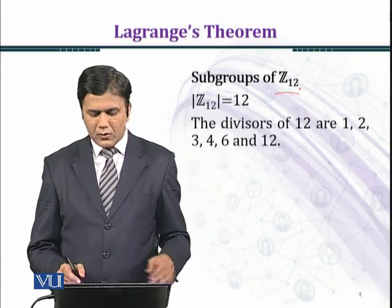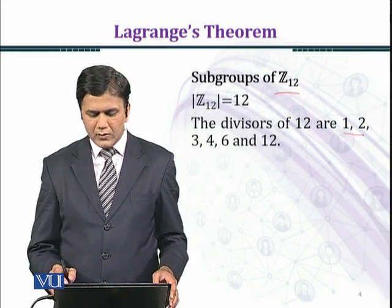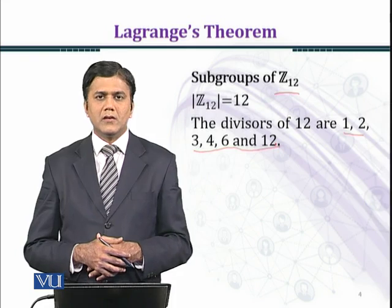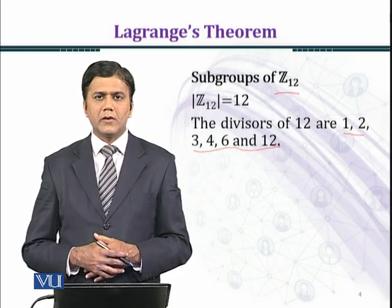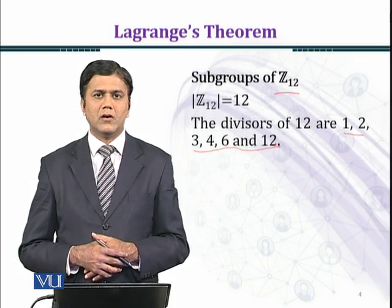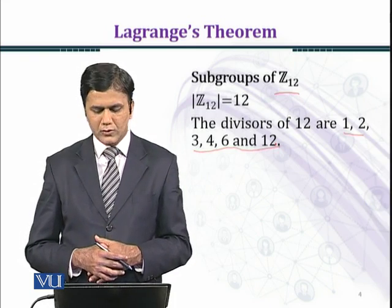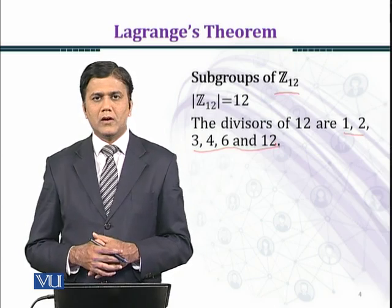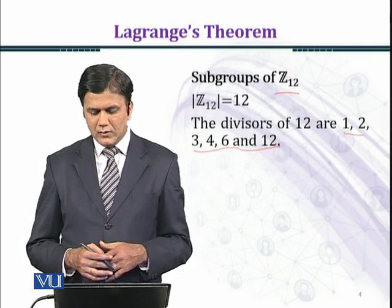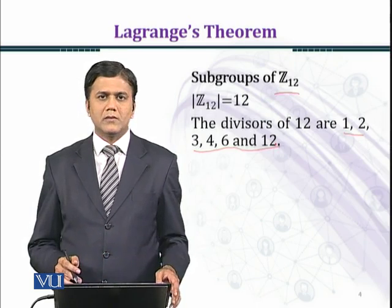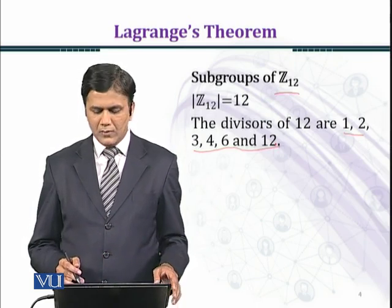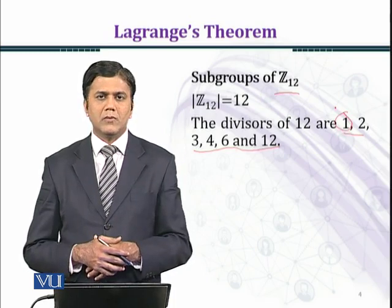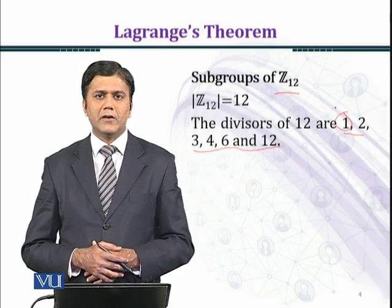The divisors of 12 are 1, 2, 3, 4, 6, and 12. This means that the group Z₁₂ is itself of order 12. And if a subgroup of Z₁₂ is order 1, then this means that it has one element, which is the identity element.